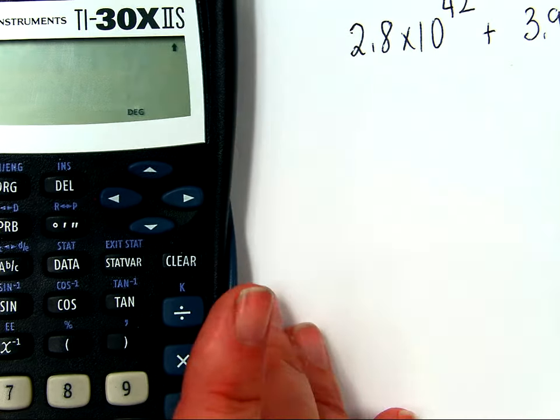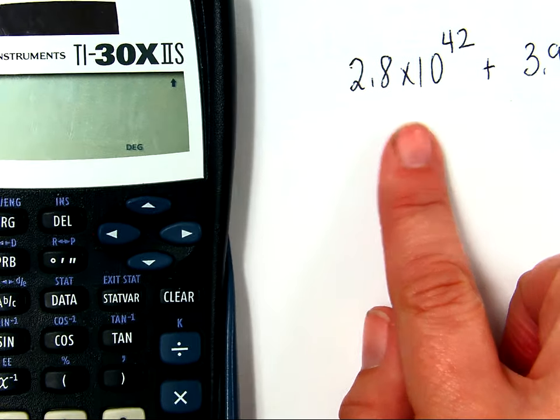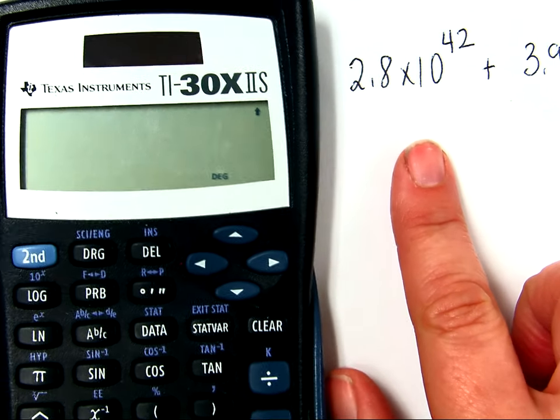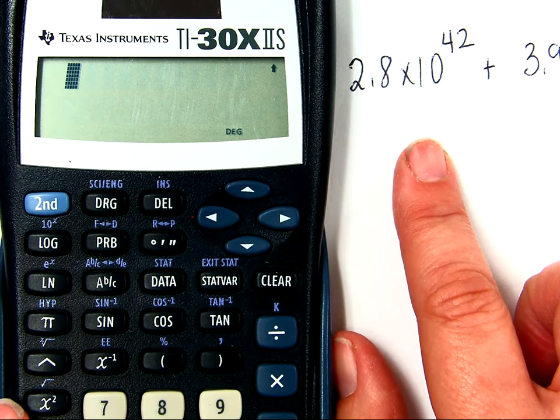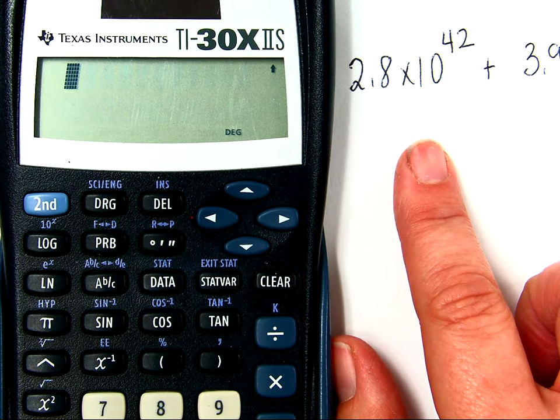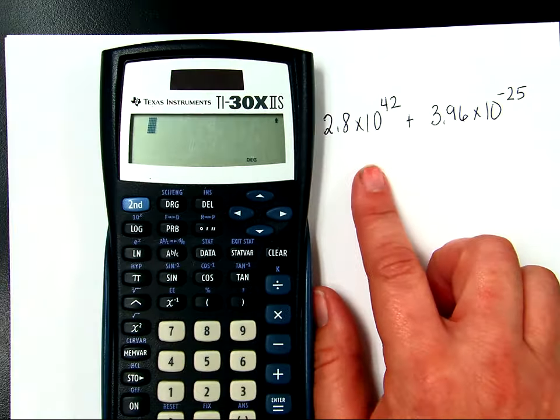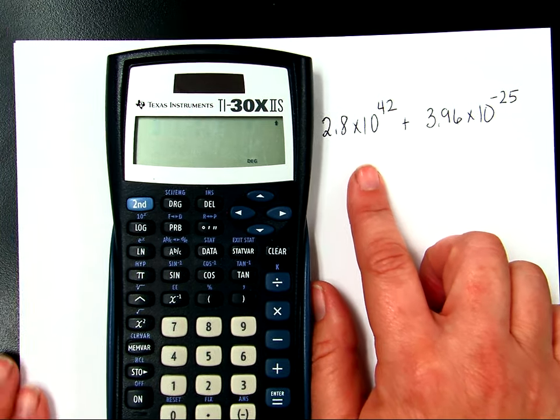So for instance, I have a number here, and it's 2.8 times 10 to the 42. So I'm going to zoom back out, but now you know what I'm looking at.